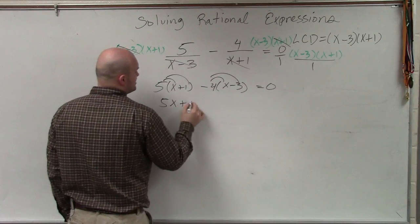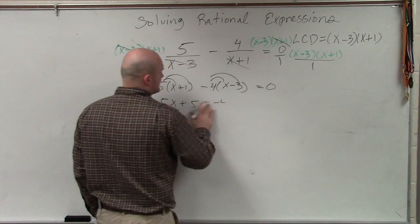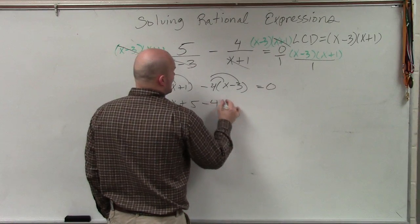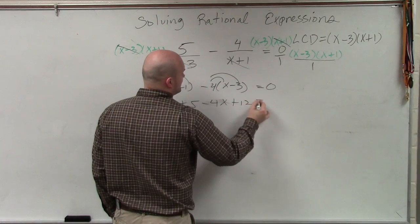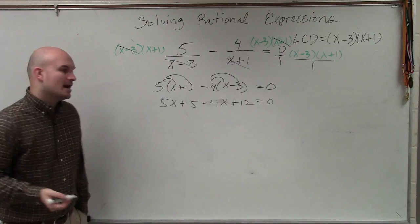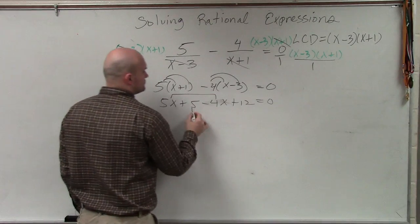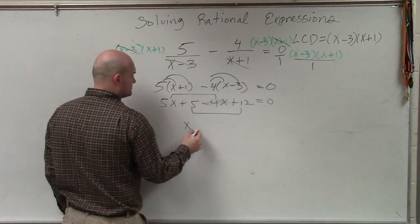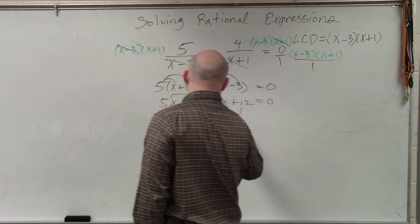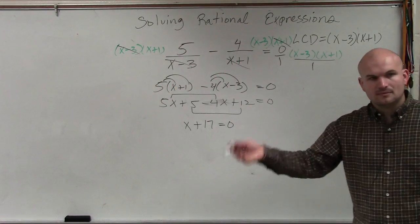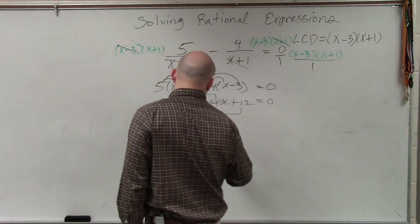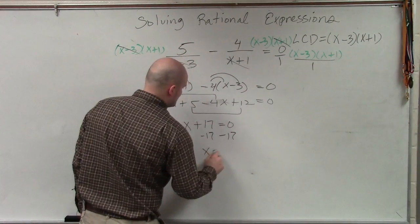So I have 5x plus 5 minus 4x plus 12 equals 0. Now, I combine my terms. So I have x plus 17 equals 0, and then I just subtract 17. So x equals negative 17.